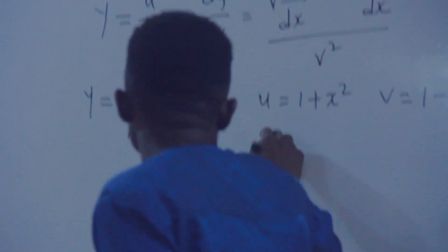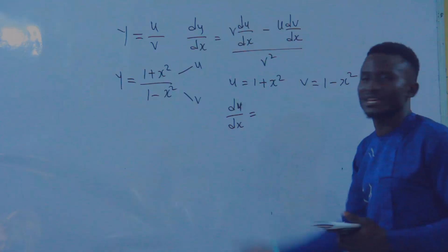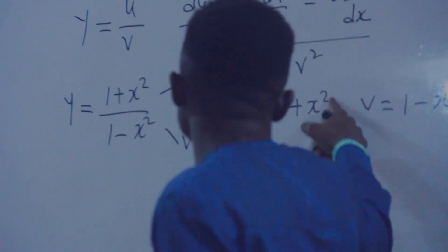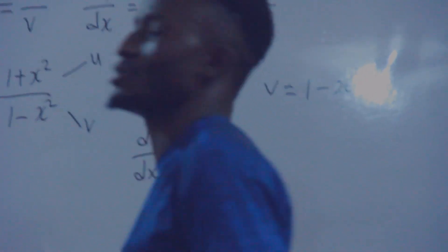What is now du/dx? When you differentiate one, it's constant, so that's zero. The differentiation of x squared will be 2x. That's 2 times 1, so du/dx equals 2x.